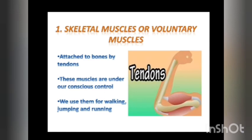Skeletal muscles are attached to the bones by a special white cord called a tendon, and they are in our conscious control — that is, we can control these muscles. We use them for walking, jumping, running, writing, etc.